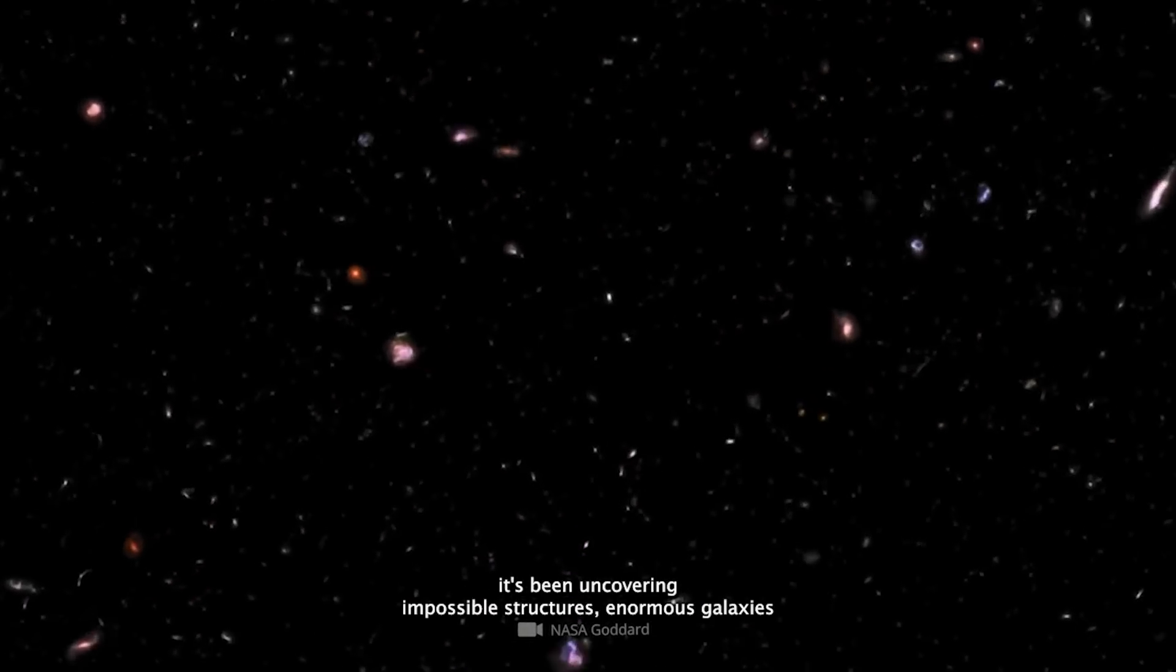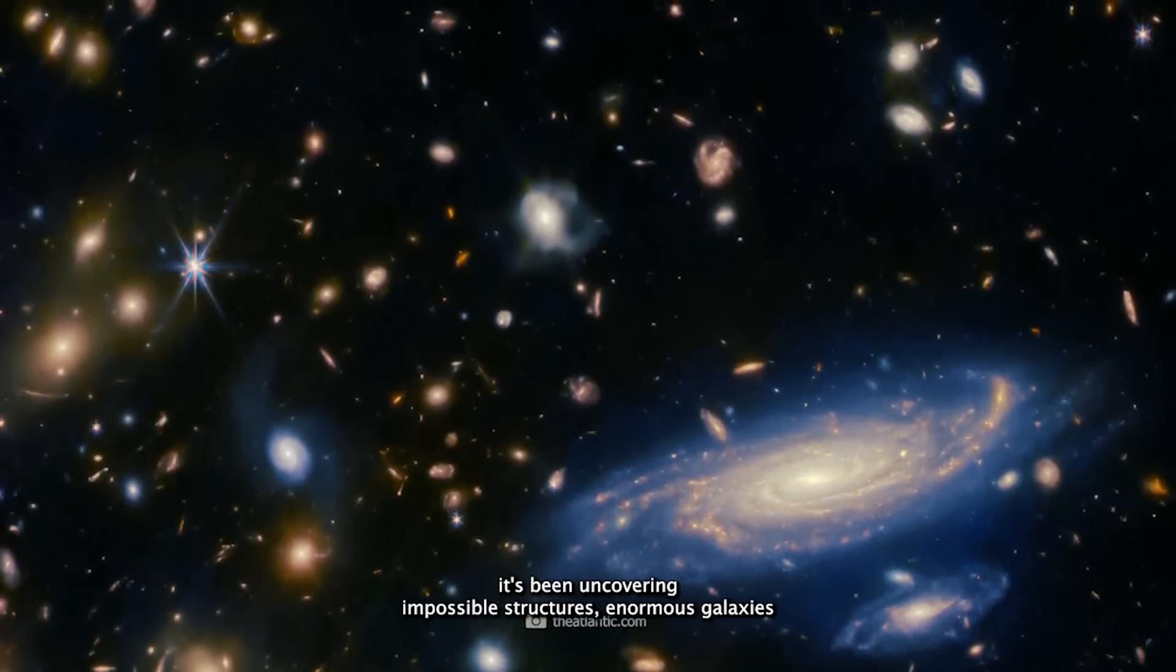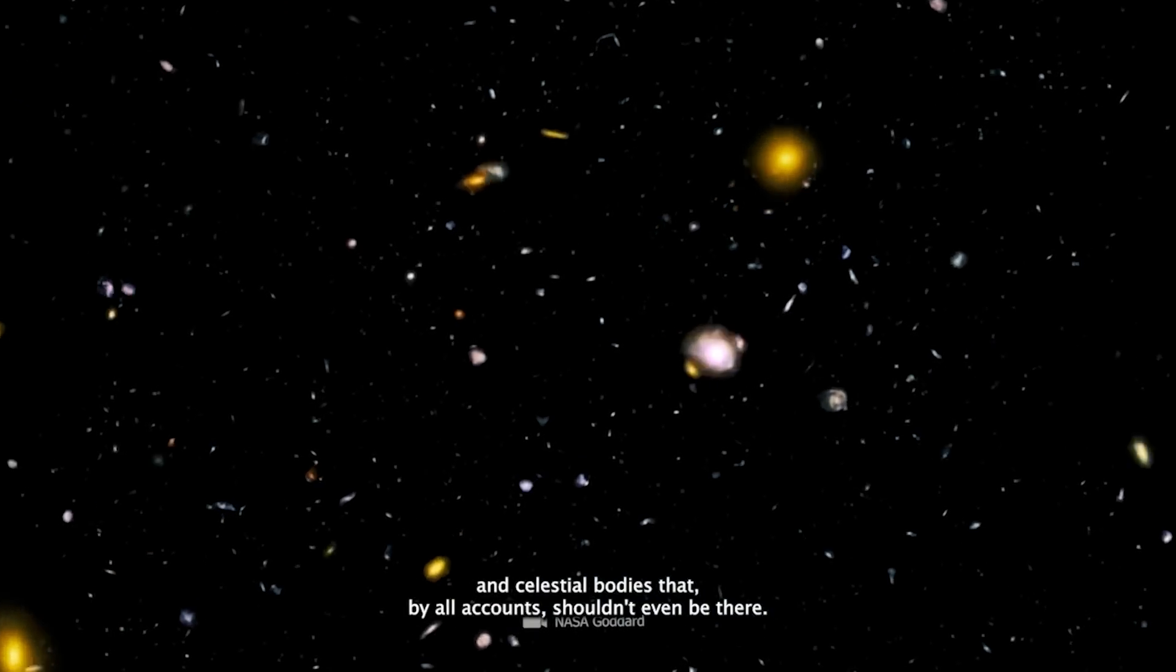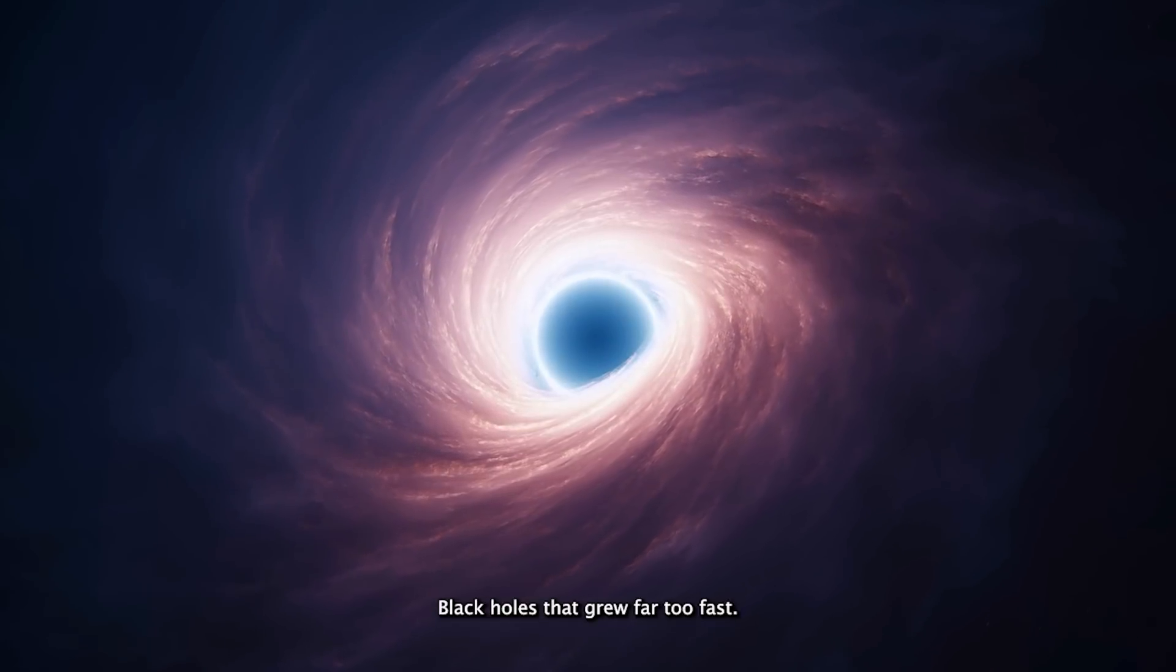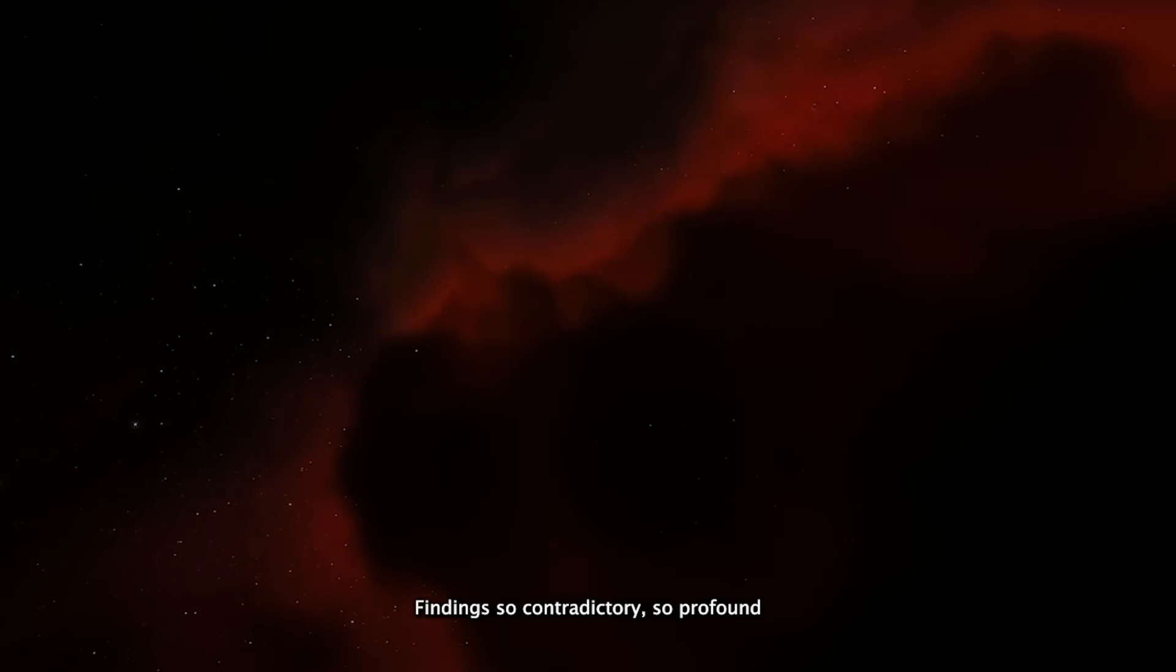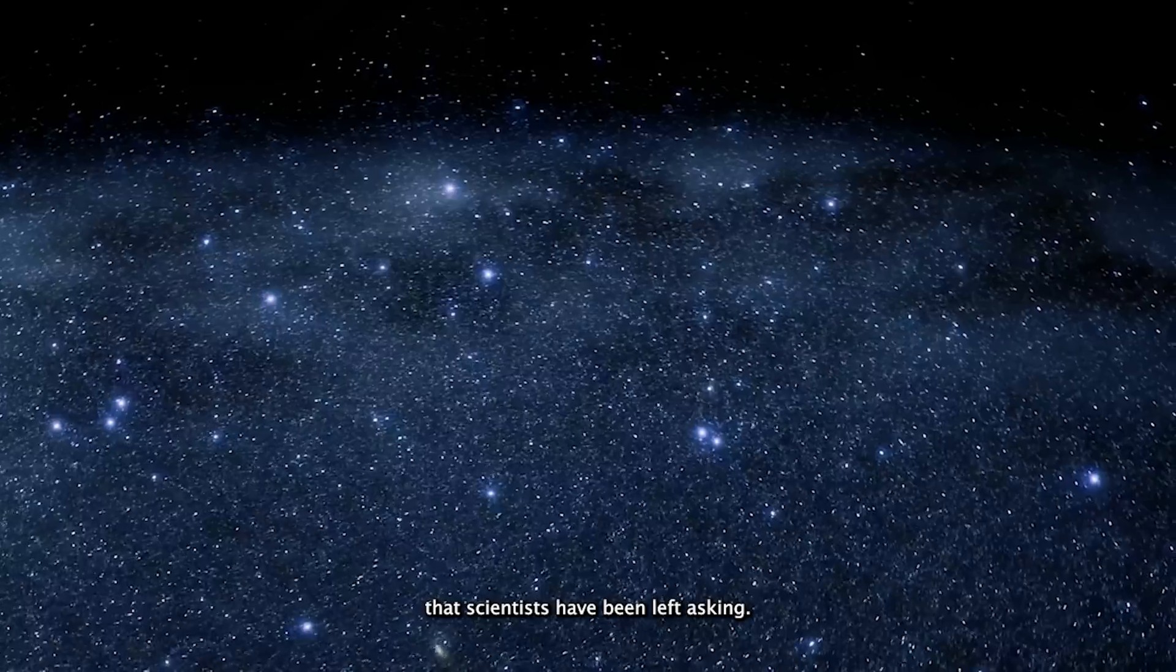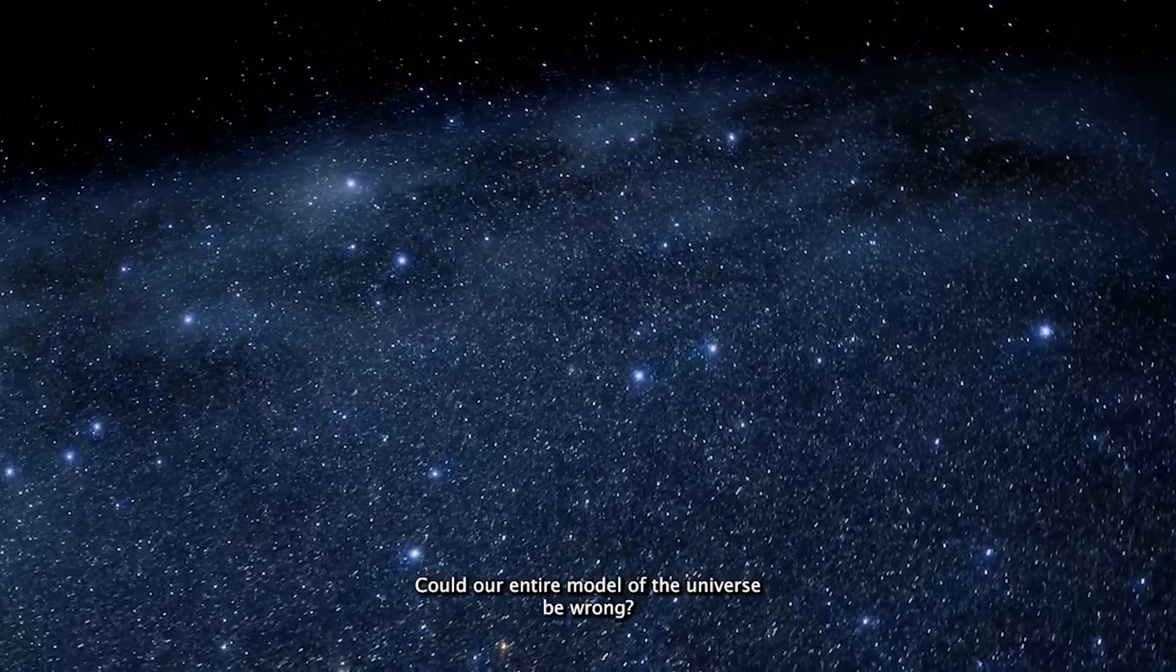But instead of confirming our most trusted theories, it's been uncovering impossible structures. Enormous galaxies and celestial bodies that, by all accounts, shouldn't even be there. Galaxies that formed far too early, black holes that grew far too fast, heavy elements that shouldn't exist yet. Findings so contradictory, so profound, that scientists have been left asking, could our entire model of the universe be wrong?